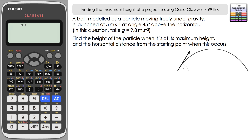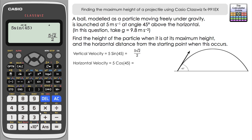Let's start by splitting the velocity into horizontal and vertical components. The vertical component will be 5 times sine 45. In calculate mode, 5 times sine 45 gives 5 root 2 over 2 — I'll keep that as the exact answer for now. The horizontal component: cosine 45 is the same as sine 45, so 5 times cosine 45 also gives 5 square root 2 over 2. I'll keep that in exact form as well.